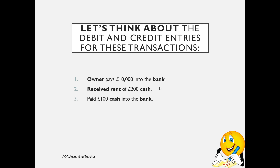Transaction 3: we've paid £100 of cash into the bank. Two assets are involved — bank and cash — so we just think about which direction the money moves. The bank is increasing, so we debit the bank; the cash is decreasing, so we credit the cash account. Transaction 4: we've paid wages of £50 in cash. Wages is an expense — on the debit side — so we debit the wages account £50, and credit the cash account £50 to reduce the cash balance.